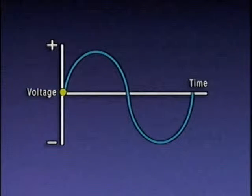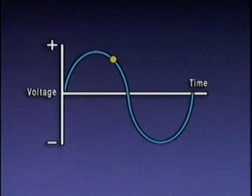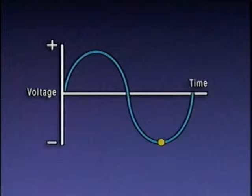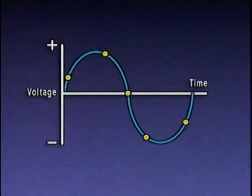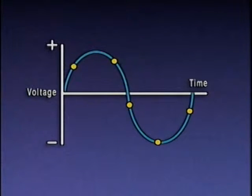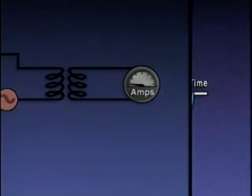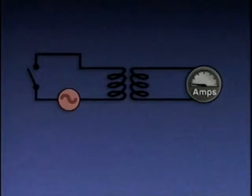As the graph indicates, AC voltage increases in a positive direction until it reaches its maximum positive value. Then it returns to zero, increases in a negative direction until it reaches its maximum negative value, then returns to zero again. This cycle of increasing and decreasing voltage values repeats many times per second. To see how this happens, we'll use this illustration of an AC circuit that contains a transformer.